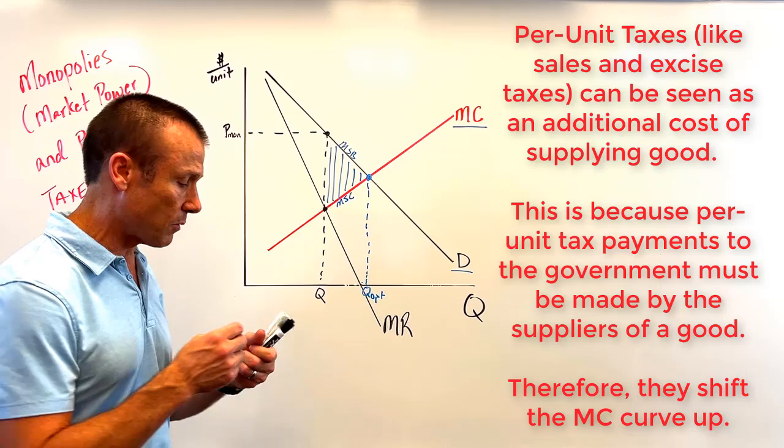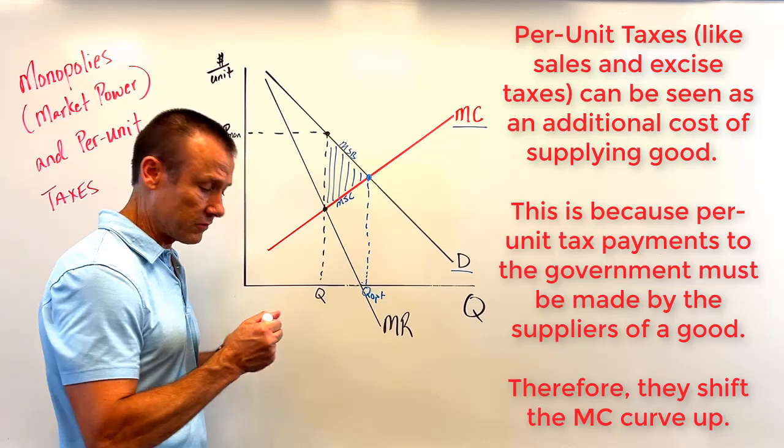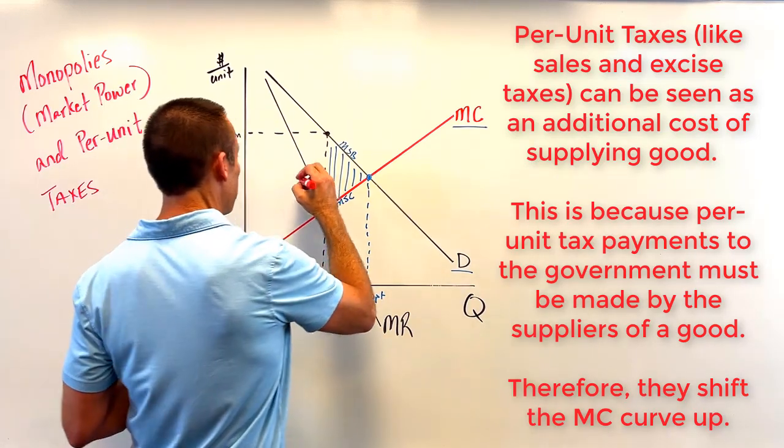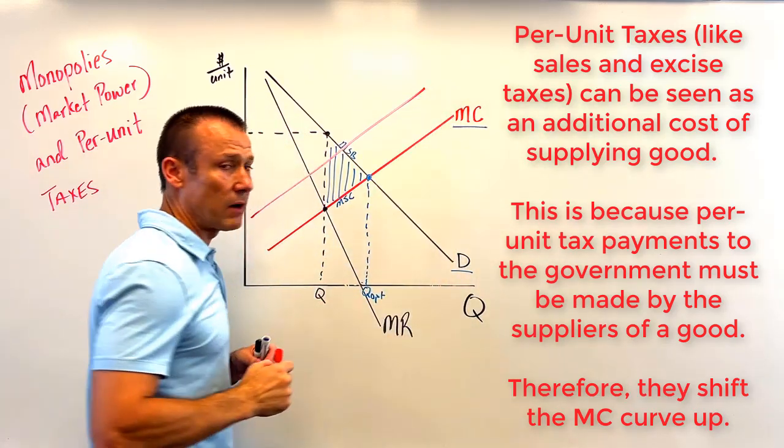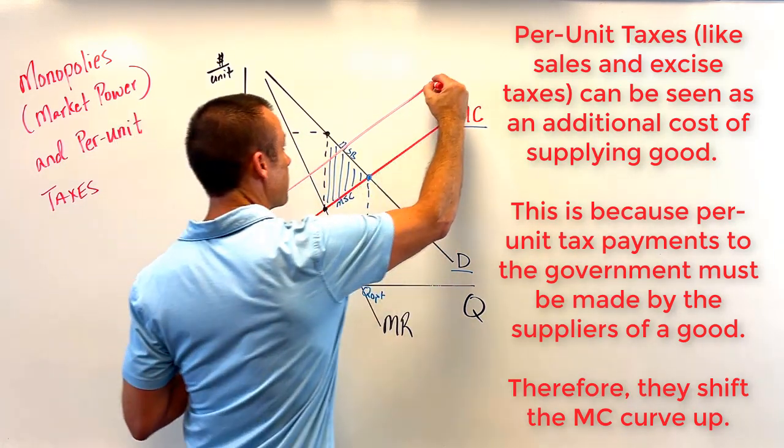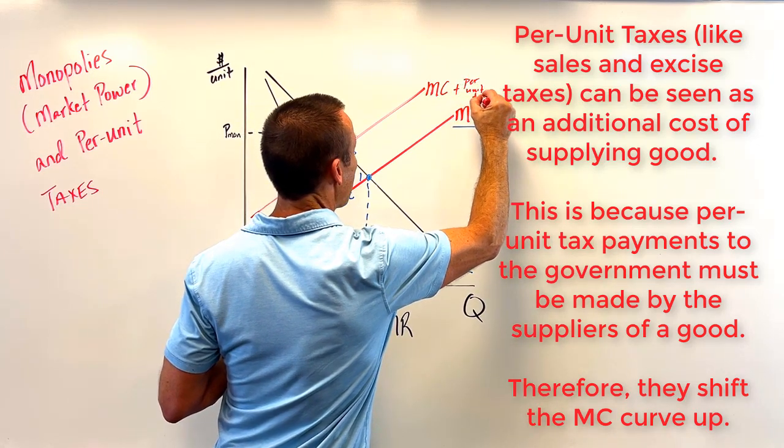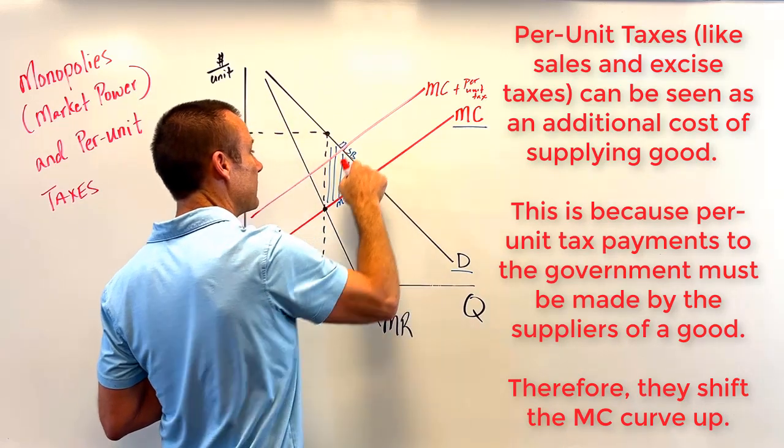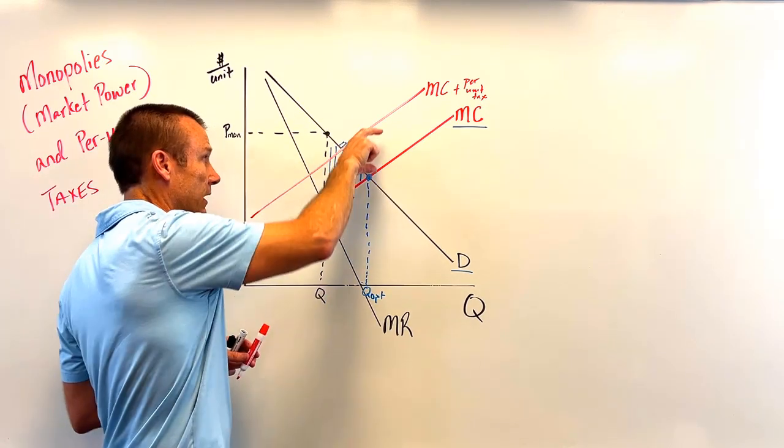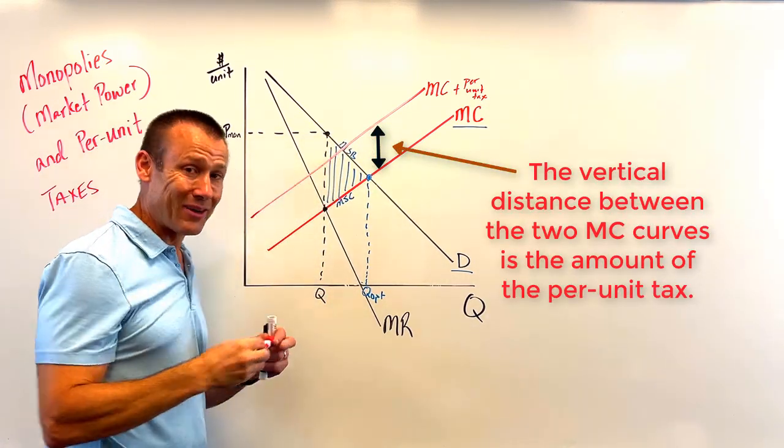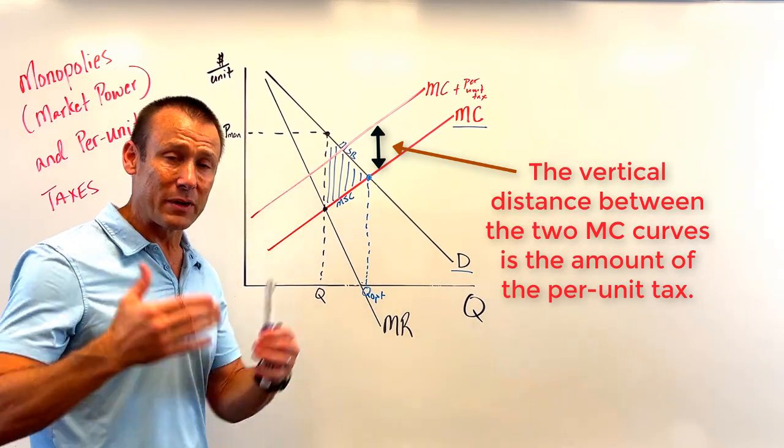But that per-unit tax is going to change the marginal cost of providing the good. It's going to increase the marginal cost. So I'm going to go ahead and draw in a new curve. I'm going to bring in, you know, whatever that per-unit tax might be. I'm just going to go with a random amount right there. So I bring in marginal cost plus the per-unit tax. All I've done is added in that per-unit tax at all levels of output. That tax you should see as a vertical, right there. So that's the amount of the tax.